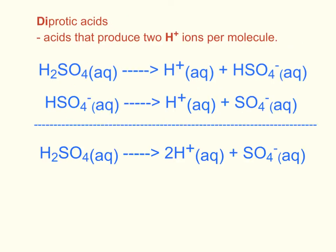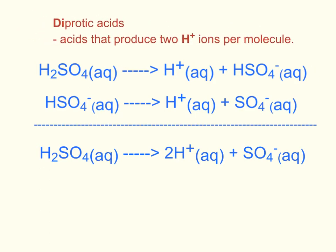Diprotic acids are the acids that produce two hydrogen ions, or two protons, per molecule of acid dissolved in water. Sulfuric acid would produce one hydrogen ion at the first step of dissociation, and once the remaining ion dissociates once more, there will be another proton produced. So at the end of the day, sulfuric acid gives off two hydrogen ions in solution.